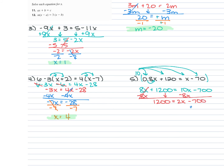From here, add 700 to both sides. So we have 1900 is equal to 2X. We divide each side by 2. 2 goes into 19 nine times with 1 left over; 2 goes into 10 five times; so it's just 950. X equals 950.